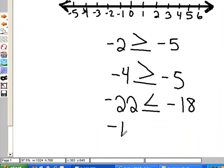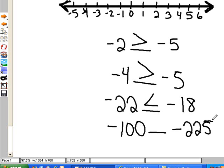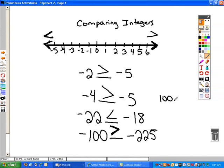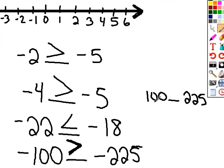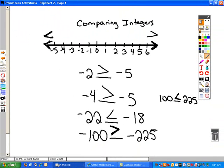Let's look at negative 100 compared to negative 225. Negative 100 is closer to 0 than negative 225, so the value would be greater. Anytime we're talking about negative, we're talking about the opposite of what a positive would be. If we had a positive 100 and a positive 225, 100 is less than 225 when we're in the positives. But when we look at negatives, we're doing the opposite — everything is opposite. So actually negative 100 would be greater than negative 225.